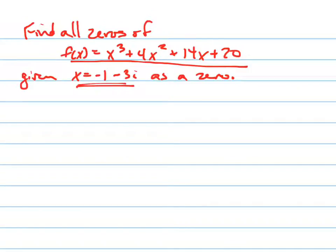So here's a really nice shortcut that you can use. If that's one of the zeros, then so is its conjugate, complex conjugate, which is negative 1 plus 3i.